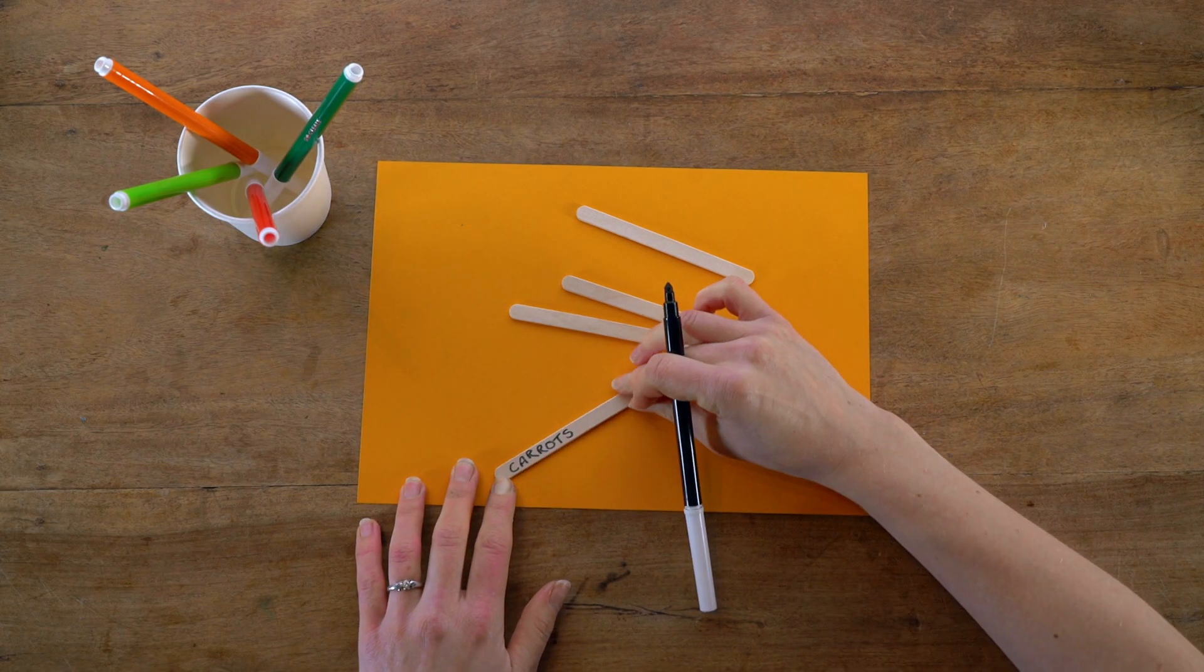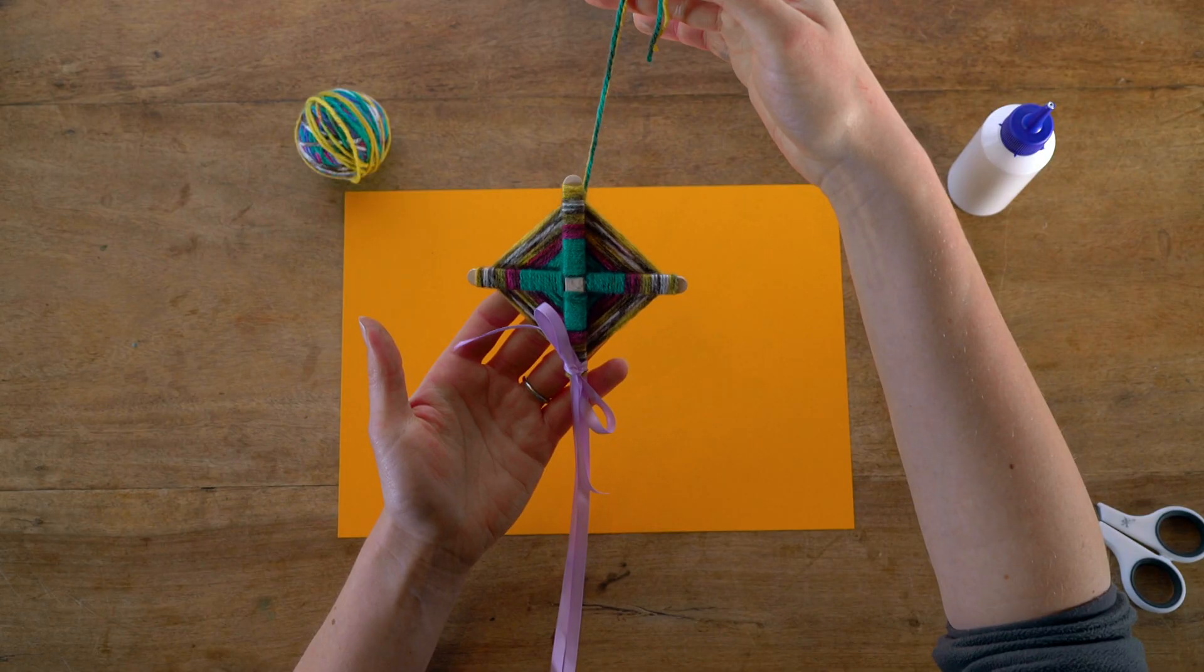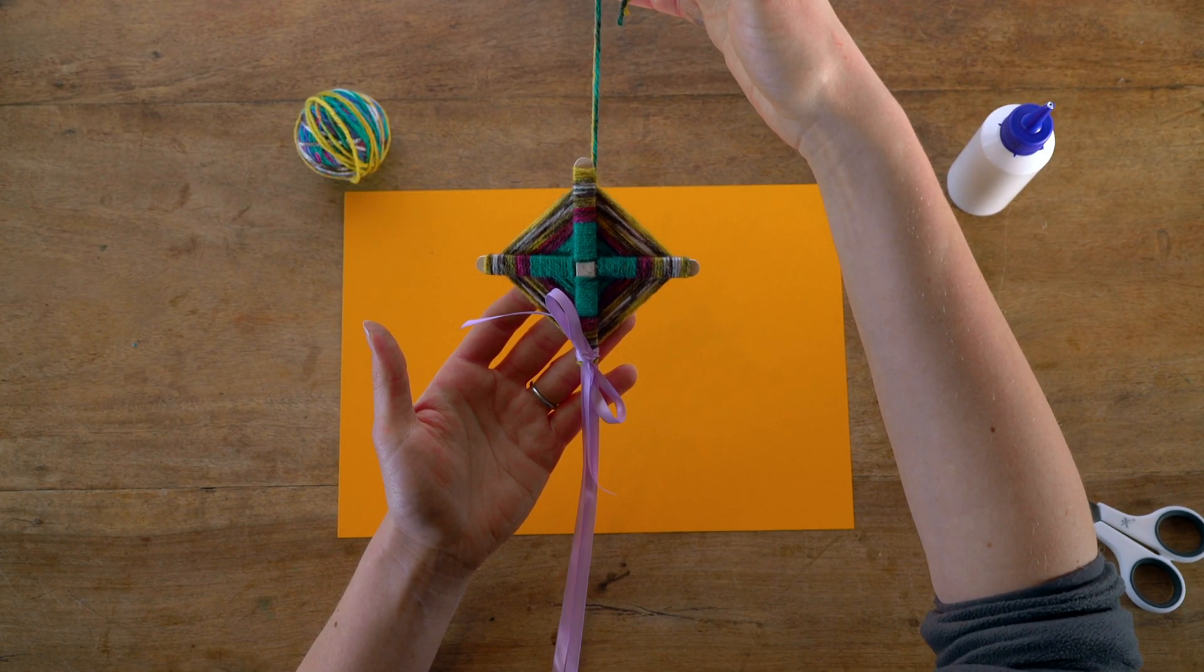Save wooden ice lolly sticks for some fun crafts like these seed markers and colour dominoes. First let's make these easy summer kites that look so cool floating in the wind.